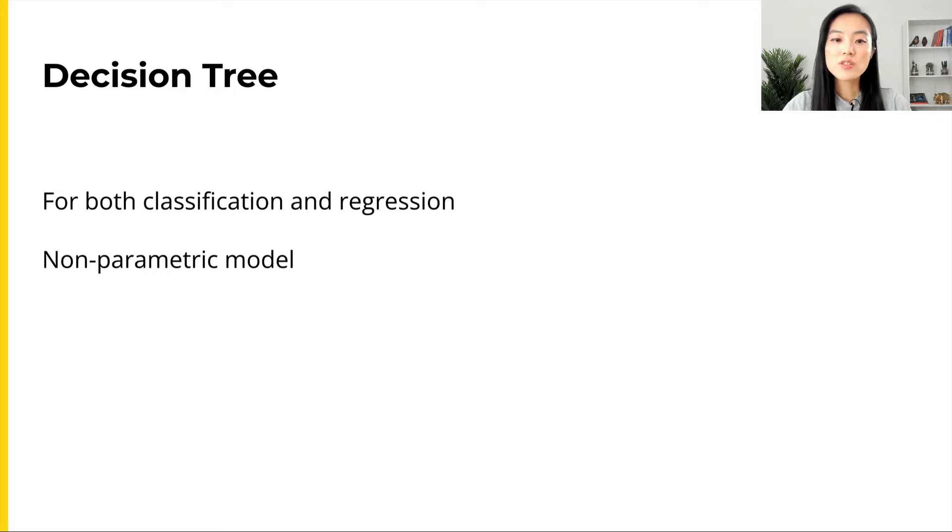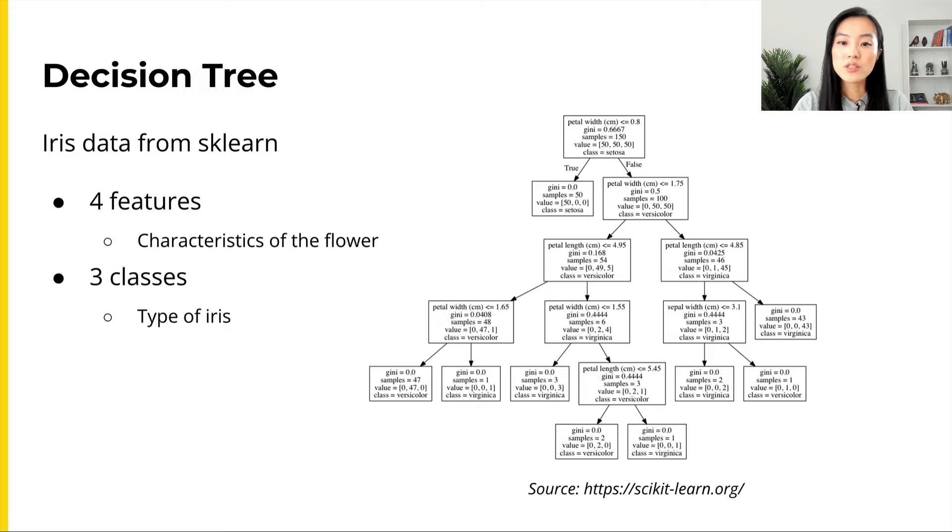Here is what a decision tree looks like. This tree is trained using the iris data from sklearn. There are four features which represent different characteristics of a flower, and the target has three classes representing three different types of iris. A decision tree is trained to predict the type of iris based on the flower characteristics.